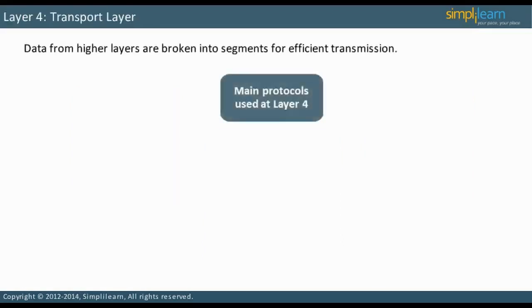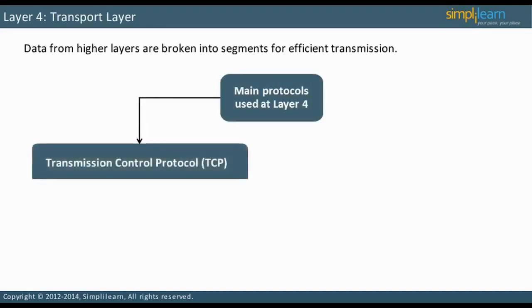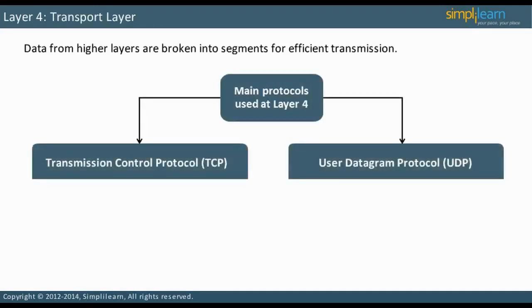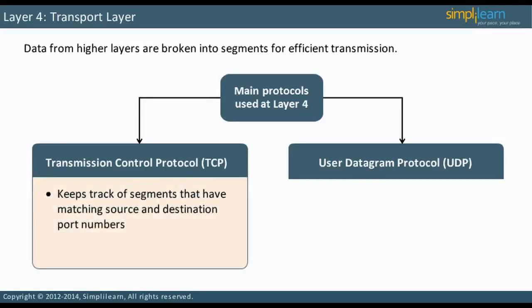The table on the slide shows the main protocols used at layer 4, which are TCP and UDP. Data from higher layers are broken into segments for efficient transmission. Transmission Control Protocol, TCP, is connection-oriented — it keeps track of a data flow. Once a TCP session is established, it is maintained until the sender or receiver terminates the session, just like a telephone call. TCP keeps track of segments that have matching source and destination port numbers, and also provides reliable transport. If the source does not receive an acknowledgement that the segments have been received at the destination, the source retransmits the segments.